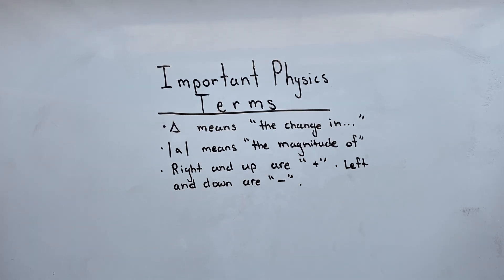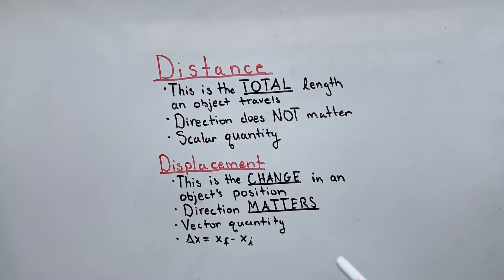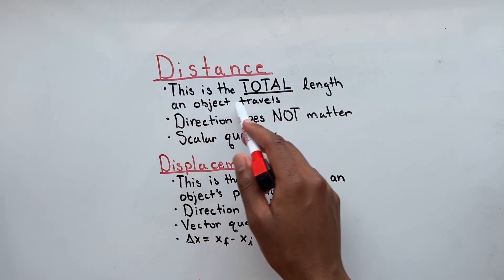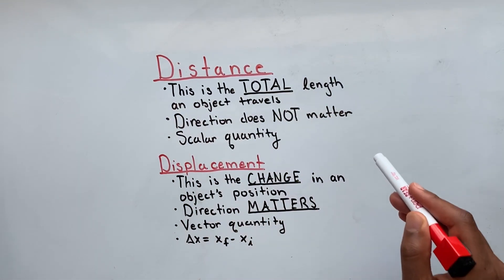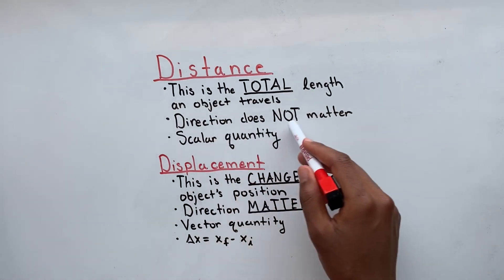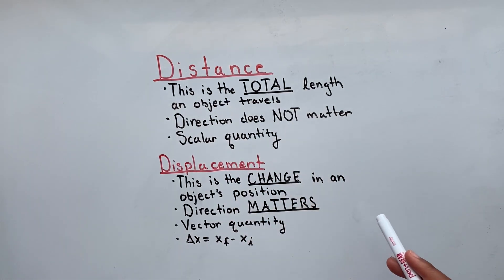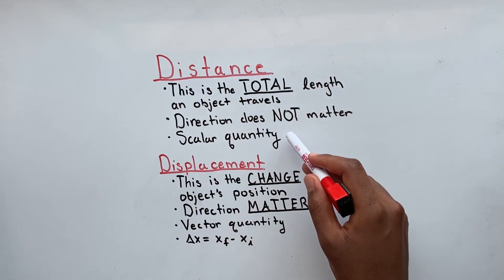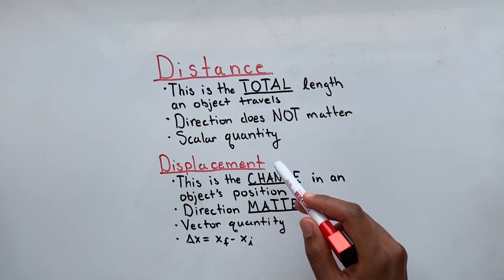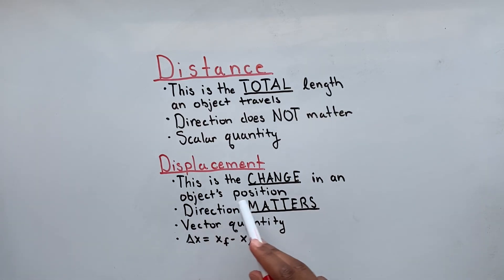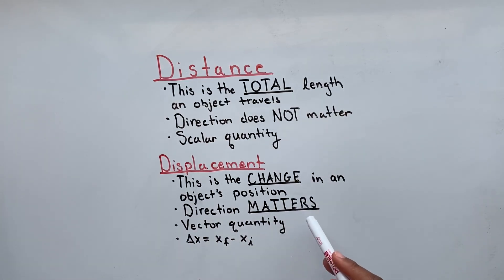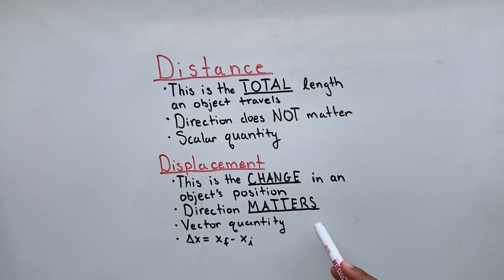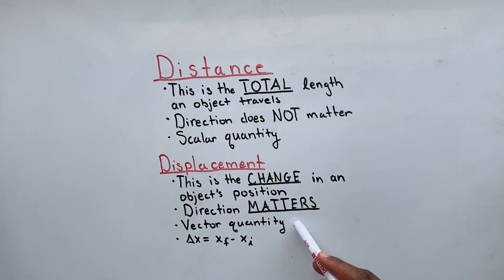Now let's get into the lecture. Distance is defined as the total length an object travels. We do not take into consideration the direction the object travels. Since we only take into account the magnitude, we consider distance as a scalar quantity. Displacement is defined as the change in an object's position. We do take into consideration the direction the object travels. Since we take into consideration the direction as well as the magnitude, we consider displacement as a vector quantity.